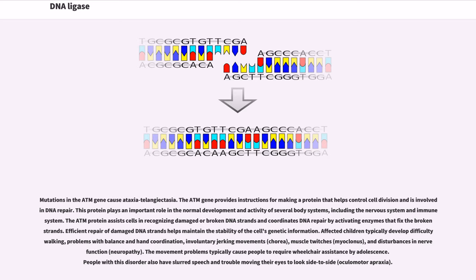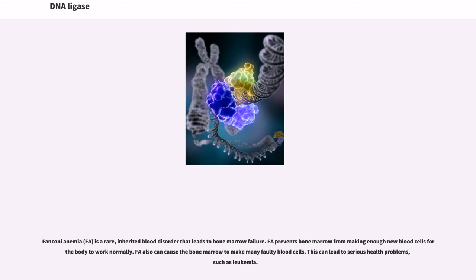Fanconi anemia, FA, is a rare inherited blood disorder that leads to bone marrow failure. FA prevents bone marrow from making enough new blood cells for the body to work normally. FA also can cause the bone marrow to make many faulty blood cells. This can lead to serious health problems, such as leukemia.